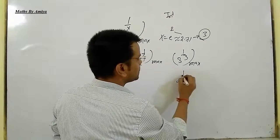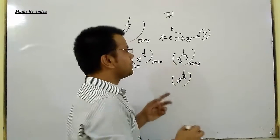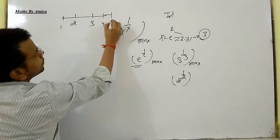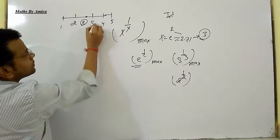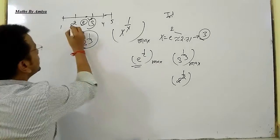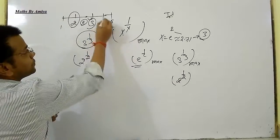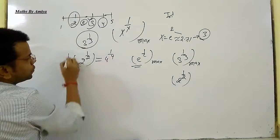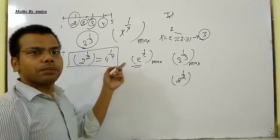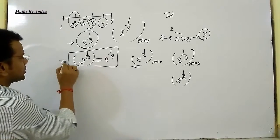The second maximum is 2 raised to power 1/2. If we plot 1, 2, 3, 4, 5 on a number line, e is somewhere in between. The first maximum is 3 raised to power 1/3 — the greatest value. Second is 2 raised to power 1/2. You might think the third would be 4, but 4 raised to power 1/4 and 2 raised to power 1/2 are actually the same value. So either 2^(1/2) or 4^(1/4) gives the same second maximum.